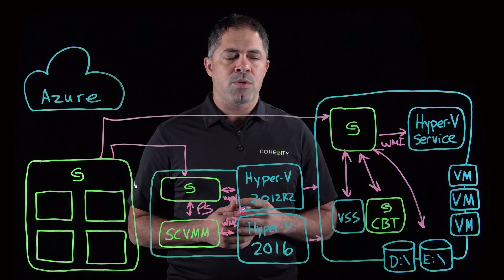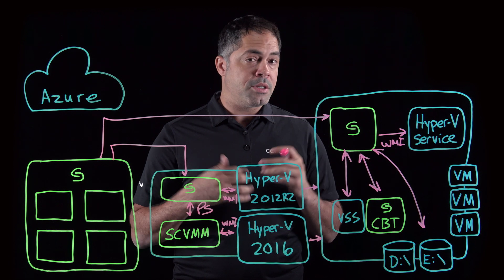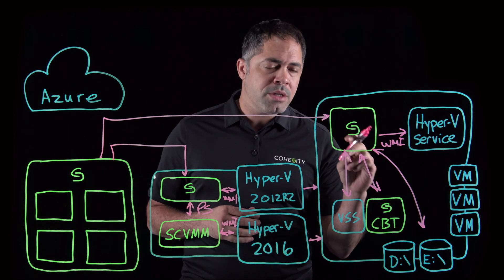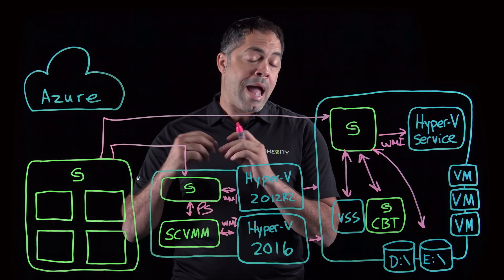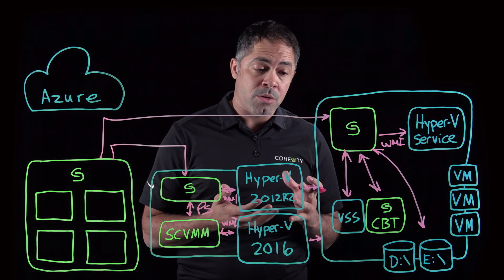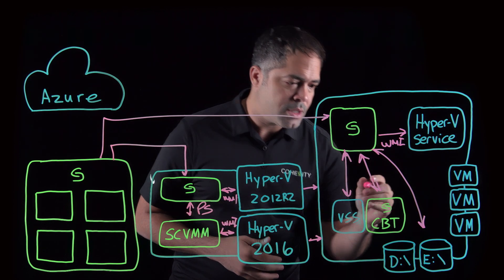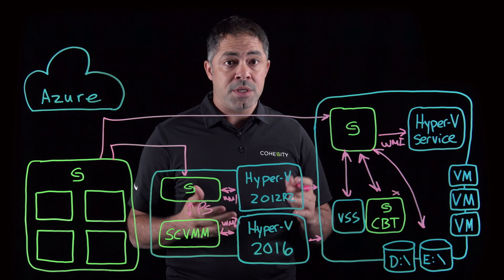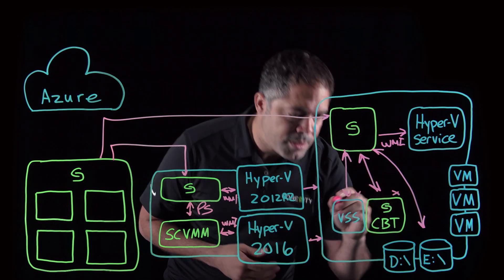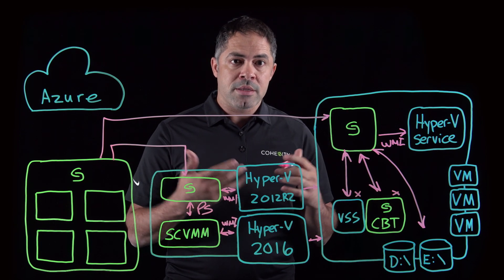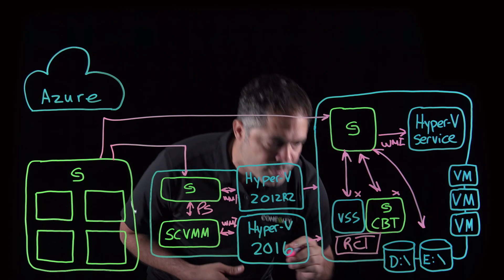Our Cohesity ephemeral agent utilizes WMI to manage and control the creation and deletion of snapshots, and also arranges integration with RCT so that it can identify whenever block changes happen and then perform the backup. In Hyper-V 2016, we eliminate the need to use the Cohesity CVT filter or driver. VSS is also eliminated because we now directly interact with and are orchestrated by RCT.